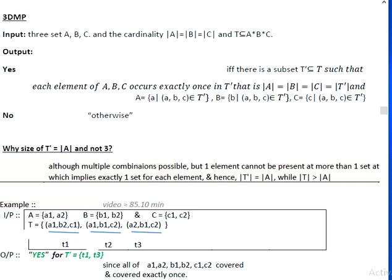Hello viewers, in this video I would like to discuss the three-dimensional matching problem. The input is three sets A, B, and C, where the cardinality of A, B, and C are equal, meaning the length of set A, set B, and set C will be the same. There will be a T which is a subset of the cross product or Cartesian product of A, B, and C. The output is yes or no because it is a decidable decision problem.